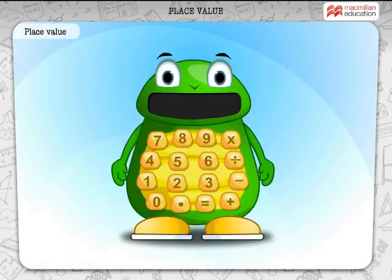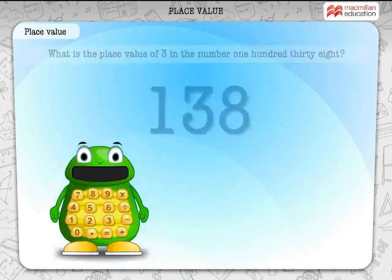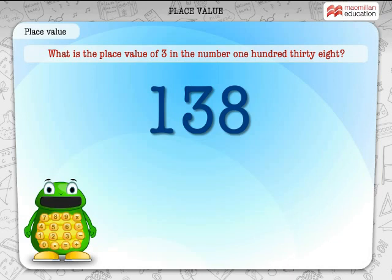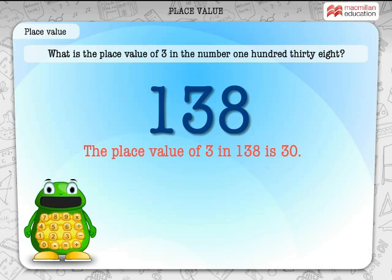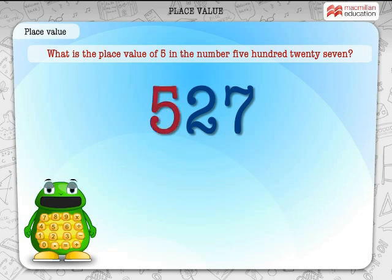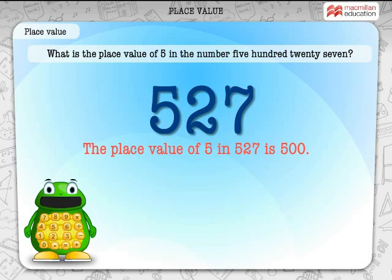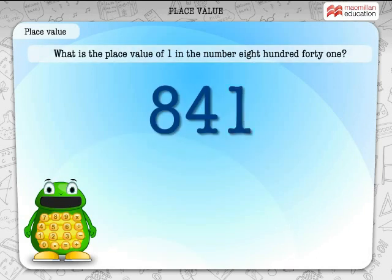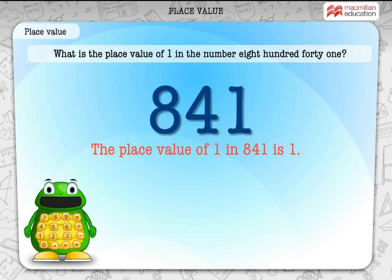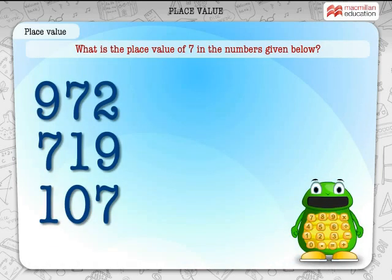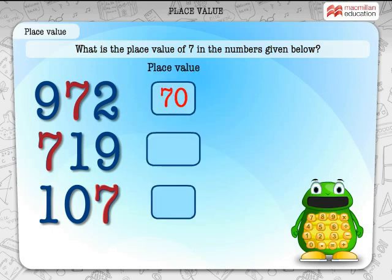Well done. You are doing very well so far. Now, spot the place values of these numerals. What is the place value of 3 in the number 138? The place value of 3 in 138 is 30. What is the place value of 5 in the number 527? The place value of 5 in 527 is 500. What is the place value of 1 in the number 841? The place value of 1 in 841 is 1. What is the place value of 7 in the numbers given below? 70, 700, and 7.